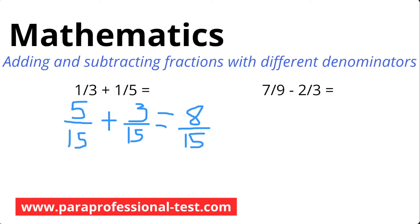Next, let's have a look at the second problem: 7 over 9 minus 2 over 3. Just like the problem we just solved, this problem also has different denominators, but instead of being an addition problem, it's a subtraction problem. However, we can use the same simple 3 steps to find the solution. Remember, step 1 is to make the denominators the same. Go ahead and solve this problem, then come back to find the solution together.